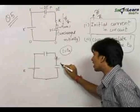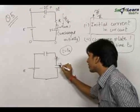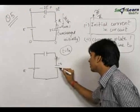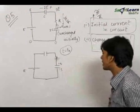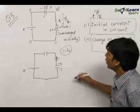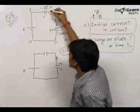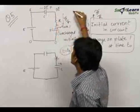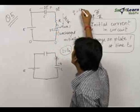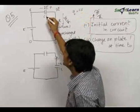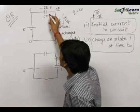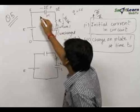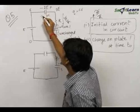Let the charge on this plate of the capacitor be q, therefore the charge on the opposite plate will be minus q. The initial charge on this plate of the capacitor was q equal to CV, that is equal to 2E times C, and this plate had charge minus 2EC.